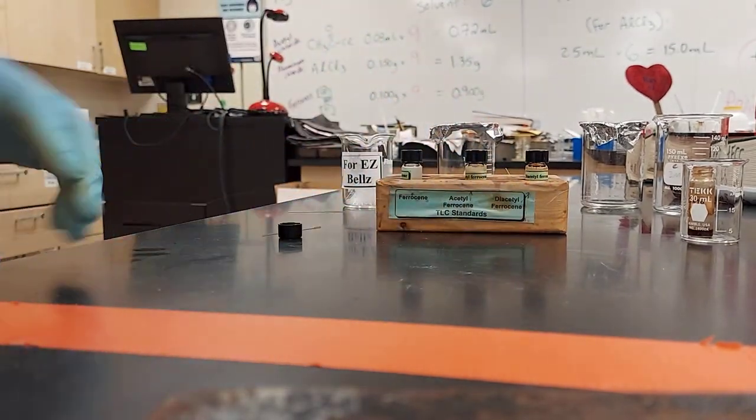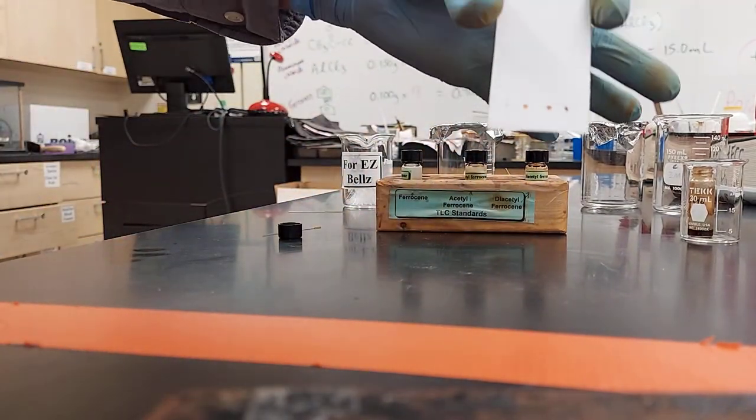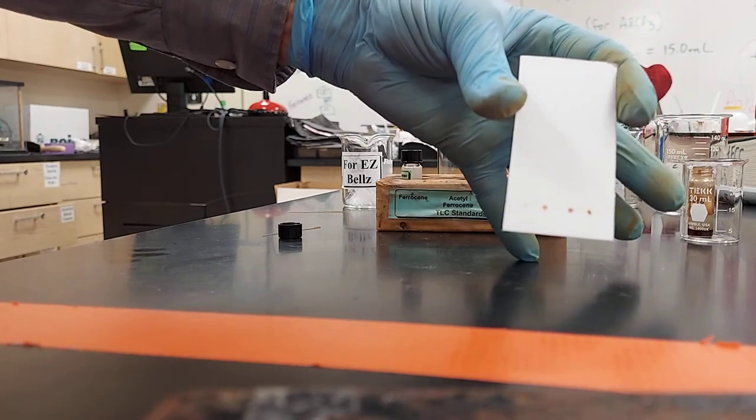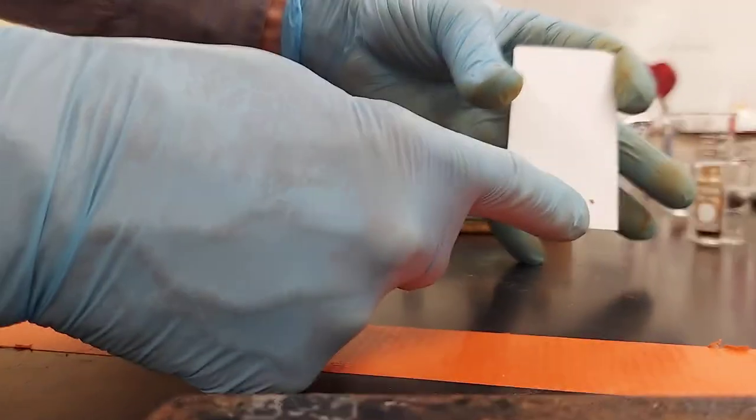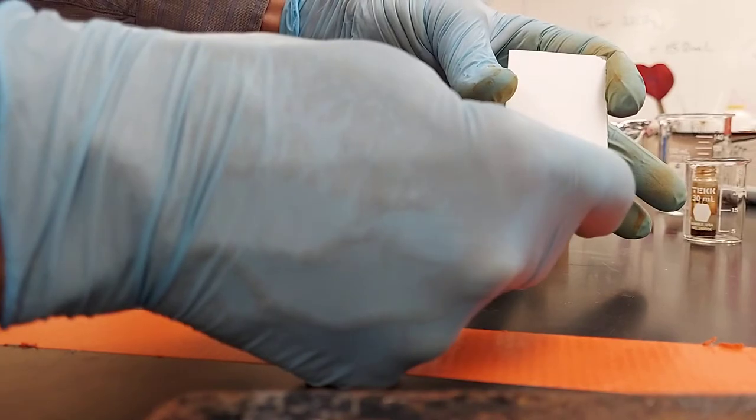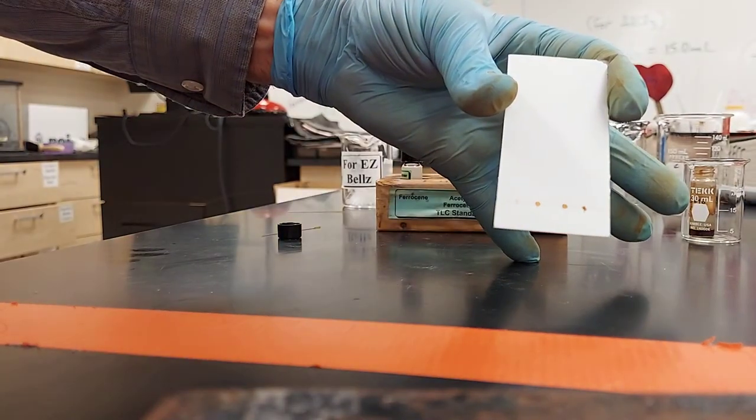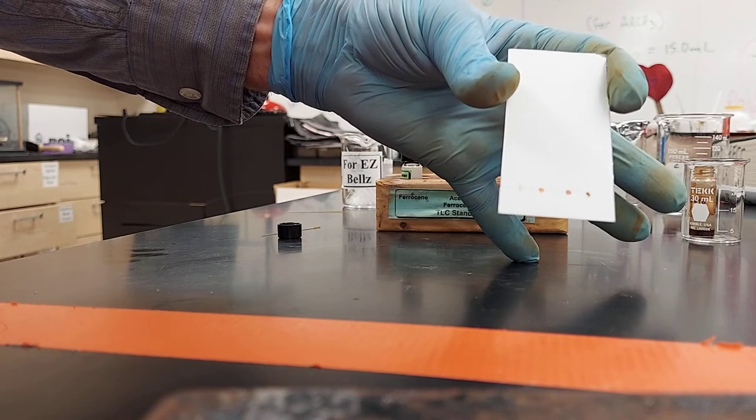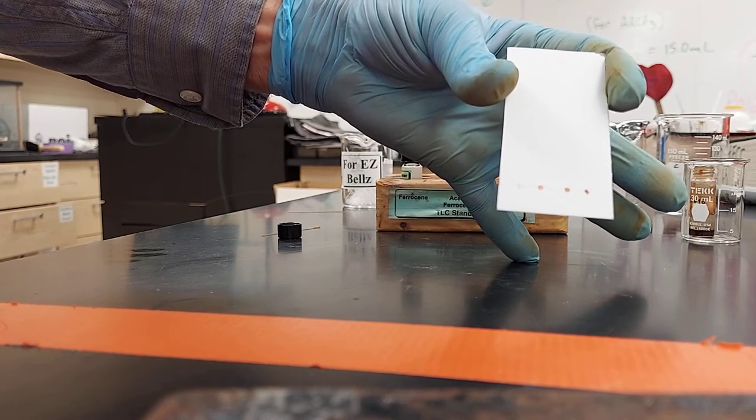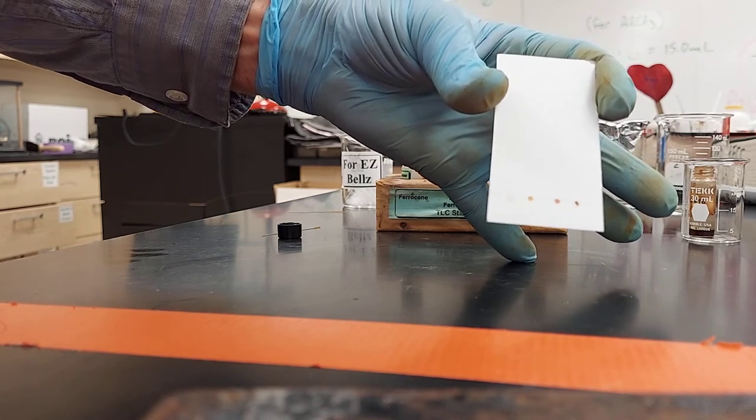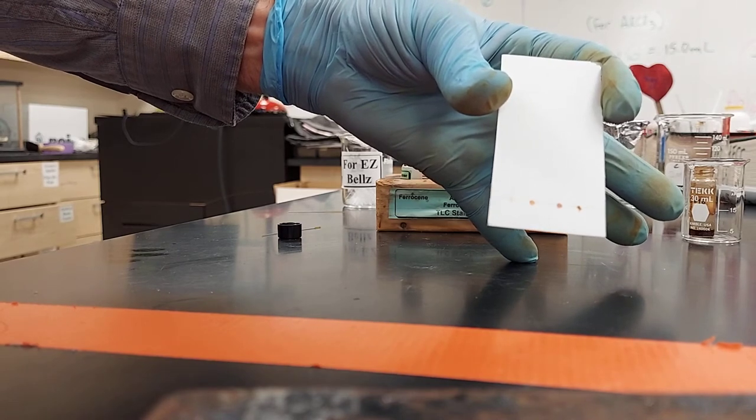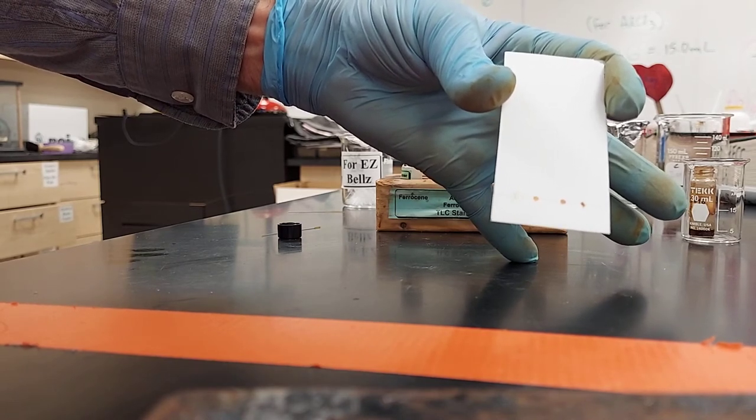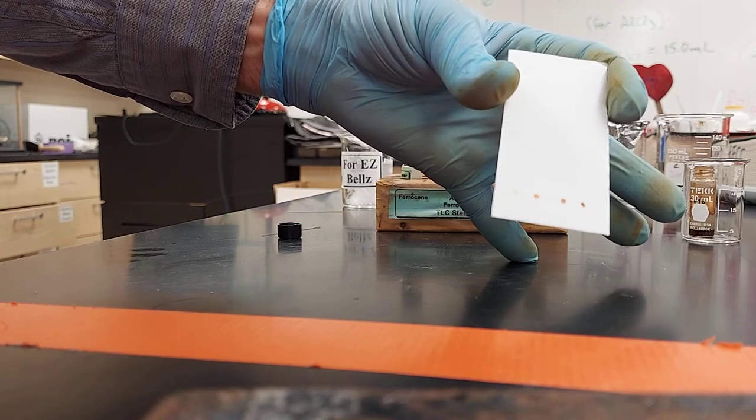So after we've finished our spots, it looks like this. Ferrocene, acetylferrocene, diacetylferrocene. And the unknown is a mixture of all three. Your only job on the unknown is to tell me which chemical in the mixture is the major chemical. To do that, we've got to develop our TLC plate.